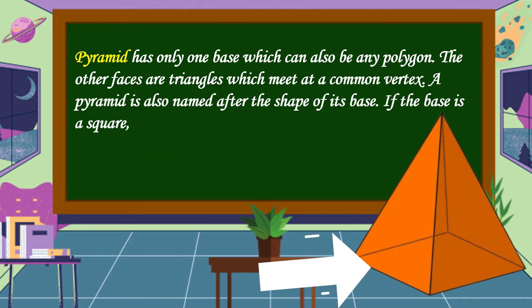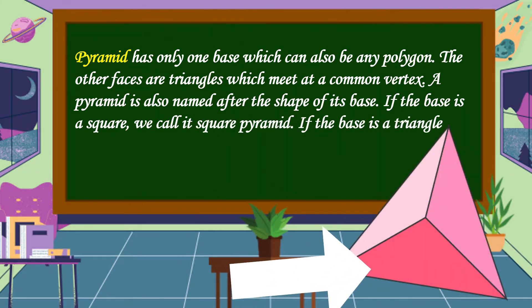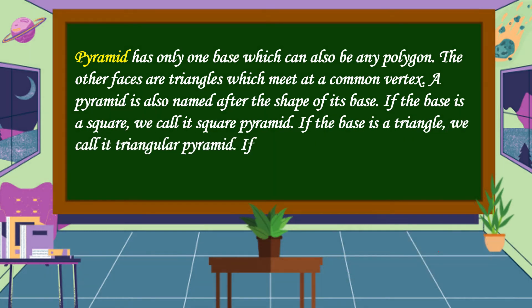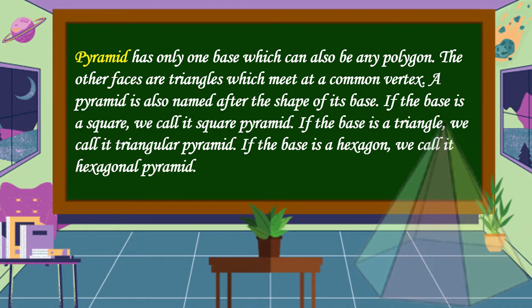If the base is a square, we call it square pyramid. If the base is a triangle, we call it triangular pyramid. If the base is a hexagon, we call it hexagonal pyramid.